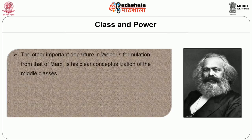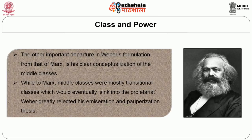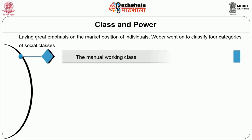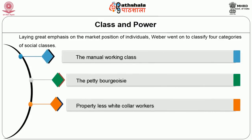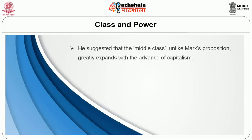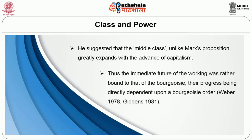Another important departure from Marx is Weber's conceptualisation of the middle classes. While Marx saw middle classes as mostly transitional, eventually sinking into the proletariat, Weber greatly rejected the immiseration and pauperisation theses, laying great emphasis on the market position of individuals. Weber classified four categories of social classes: the manual working class, the petty bourgeoisie, the propertyless white-collar workers, and those privileged through property and education. He suggested the middle class, unlike Marxist prediction, greatly expands with the advance of capitalism, with the immediate future of the working class bound to that of the bourgeoisie.